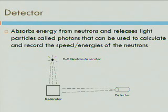The idea of the detector is that some neutrons going through the moderator will hit our detector approximately a meter away. When neutrons come into contact with the detector, some energy is absorbed in the detector's atoms, and those atoms shoot out photons that can be used to calculate and record the speeds or energies of those neutrons.